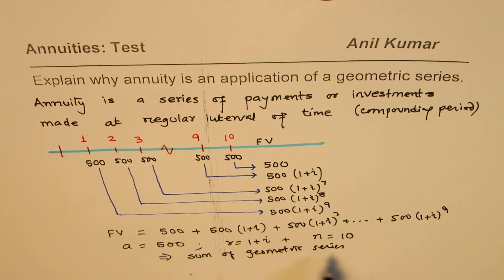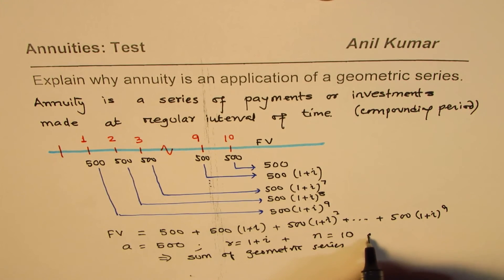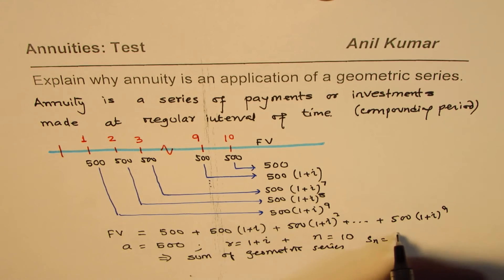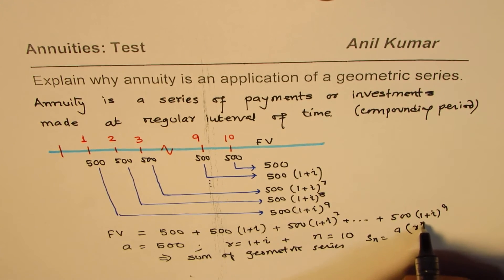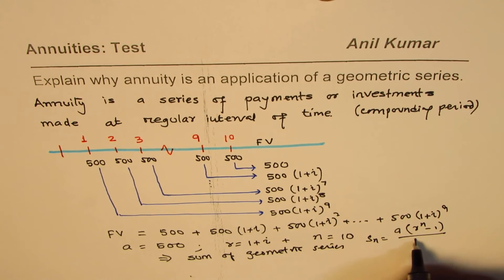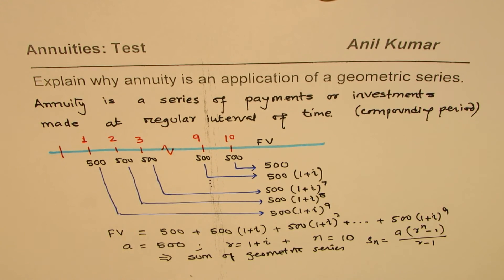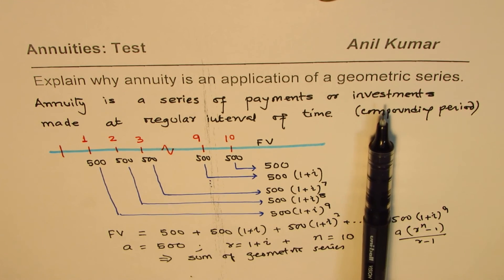We can always apply the formula for the sum of a geometric series in these cases. The sum is calculated as a × (r^n − 1) / (r − 1). This gives us a direct relation between annuities and geometric series.